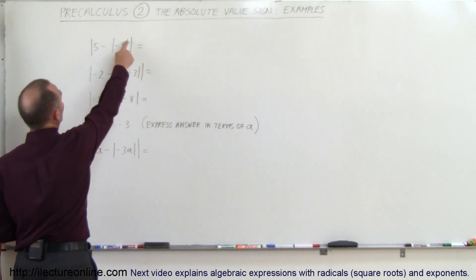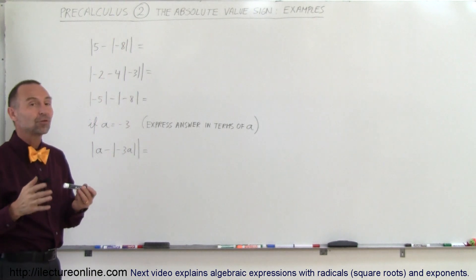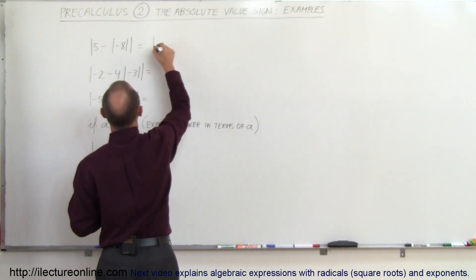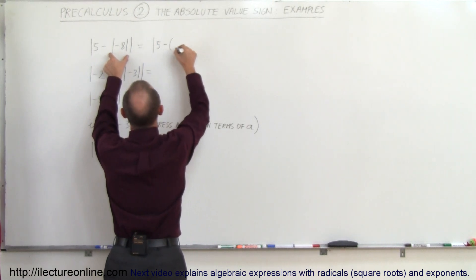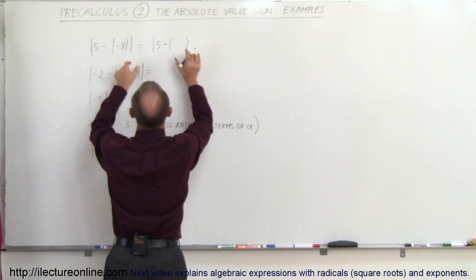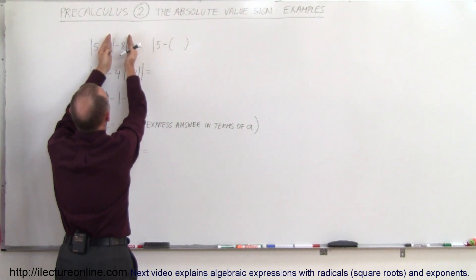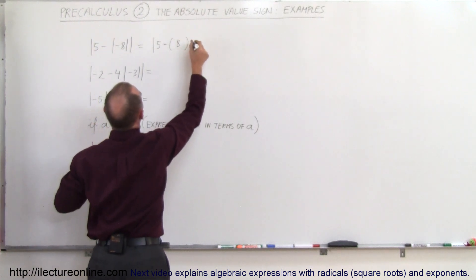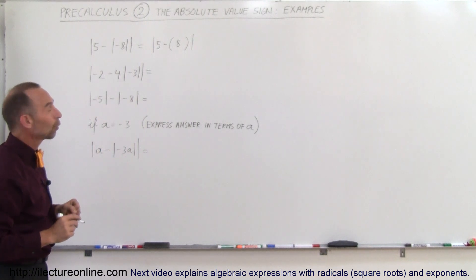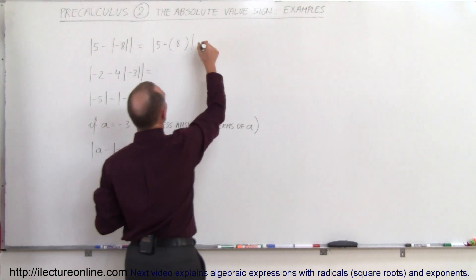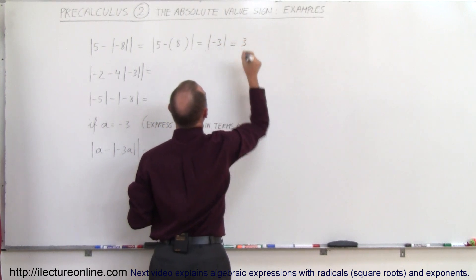So here when you look at this, you first want to solve what's inside. The absolute value of minus 8 is of course 8, so you rewrite this as the absolute value of 5 minus this quantity, and sometimes it helps to put parentheses there. Whatever you put inside here is represented by what you have over here, which is the absolute value of minus 8, which is 8. Of course, 5 minus 8 is minus 3, so this equals the absolute value of minus 3, which equals 3.